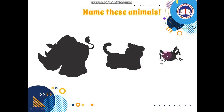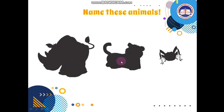What about these animals? What are these? What's this? Can you tell me? Oh, it's a rhino. And this one? It's a tiger. And what about this one? Oh, a spider. Very good. Now let's say them together one more time — a rhino, a tiger, and a spider.